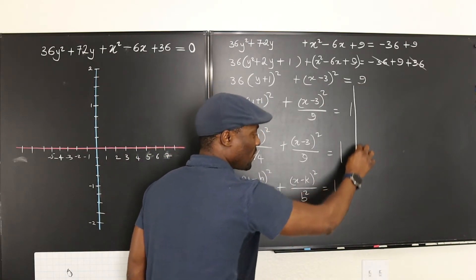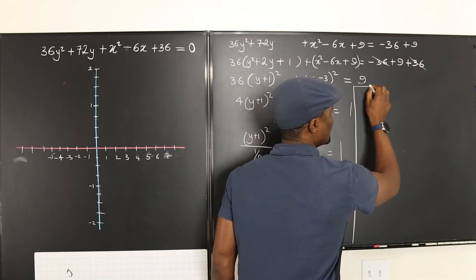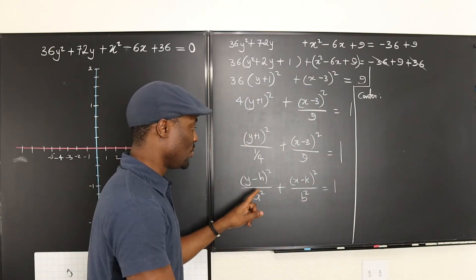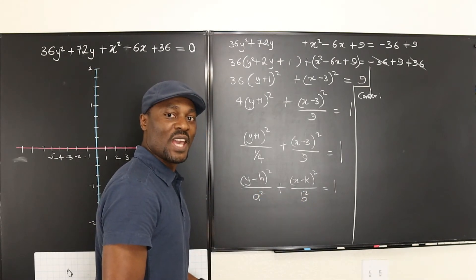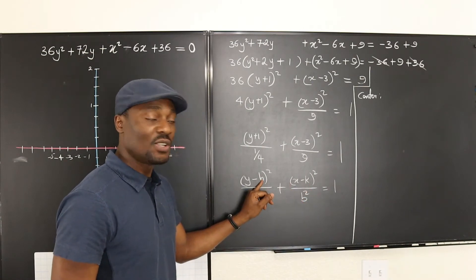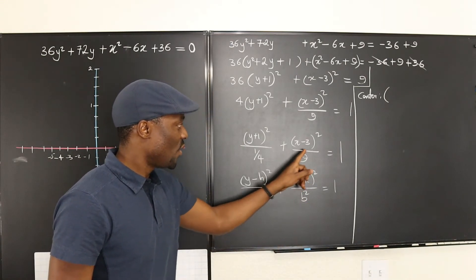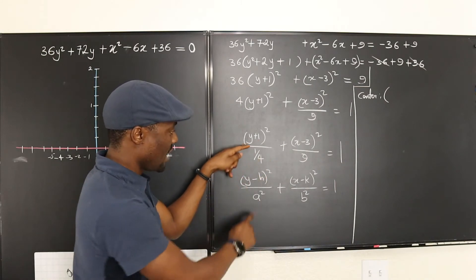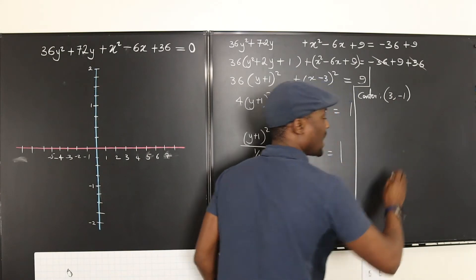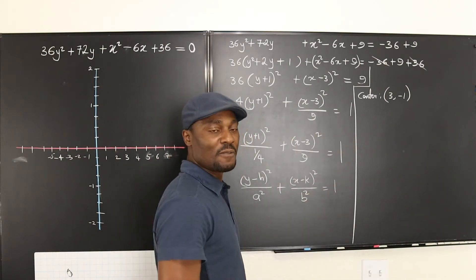Let's write out all the characteristics. Starting from the center: the center of this ellipse is usually (h, k). The issue is that k comes before h when we write our ordered pair because x comes first. So it's going to be 3 before negative 1 — the center is (3, negative 1). We can go to the graph and quickly pinpoint that point.